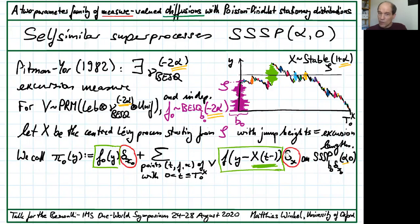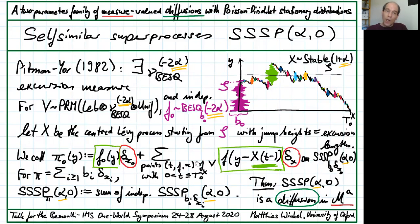This construction gives a self-similar measure-valued diffusion that we call SSSP, self-similar superprocess. Here starting from a single atom. Now for general finite purely atomic measure pi, we write it as the sum of its atoms, we just add up independent SSSPs starting from each atom separately. We show that this process is a diffusion SSSP alpha zero.